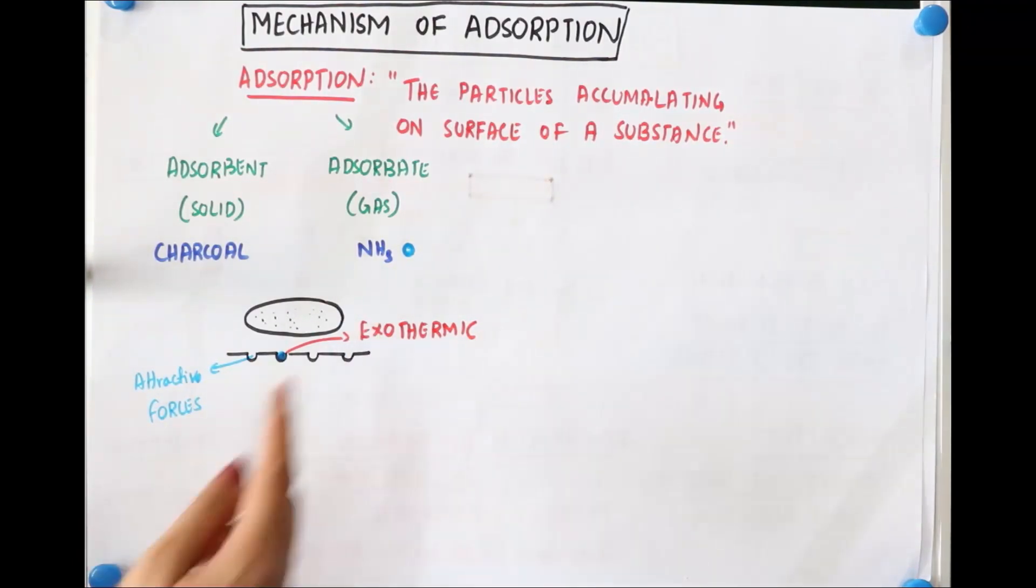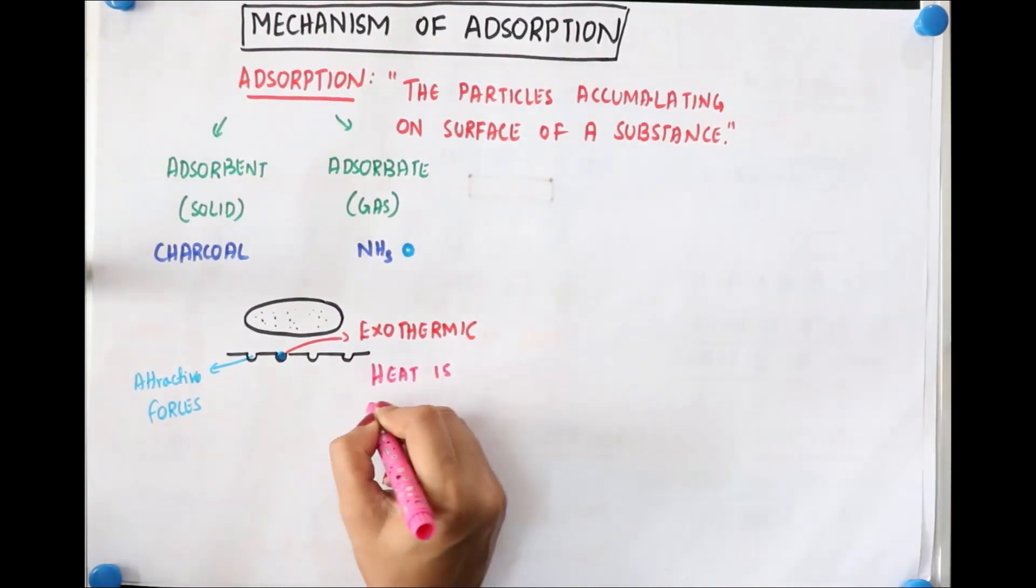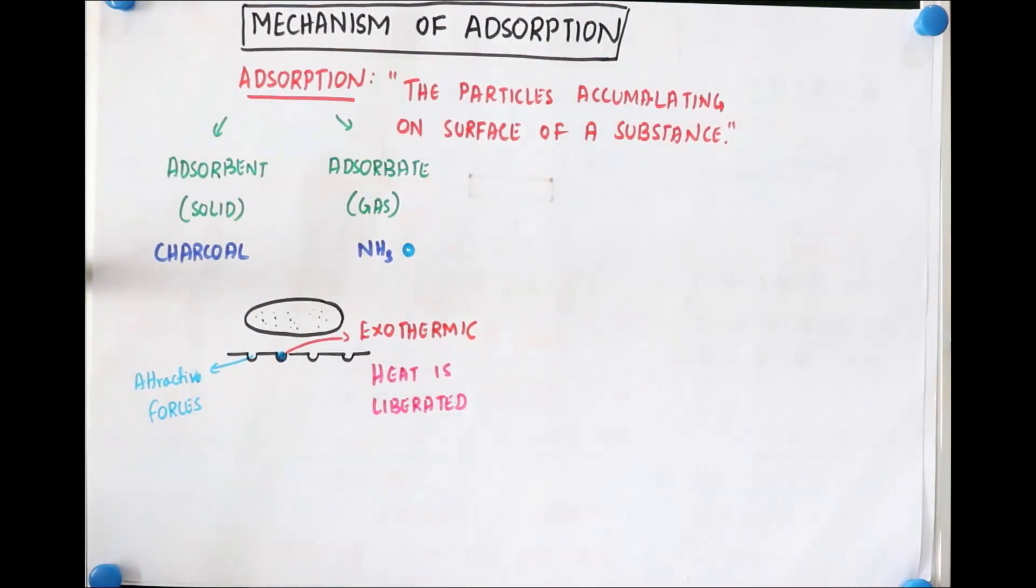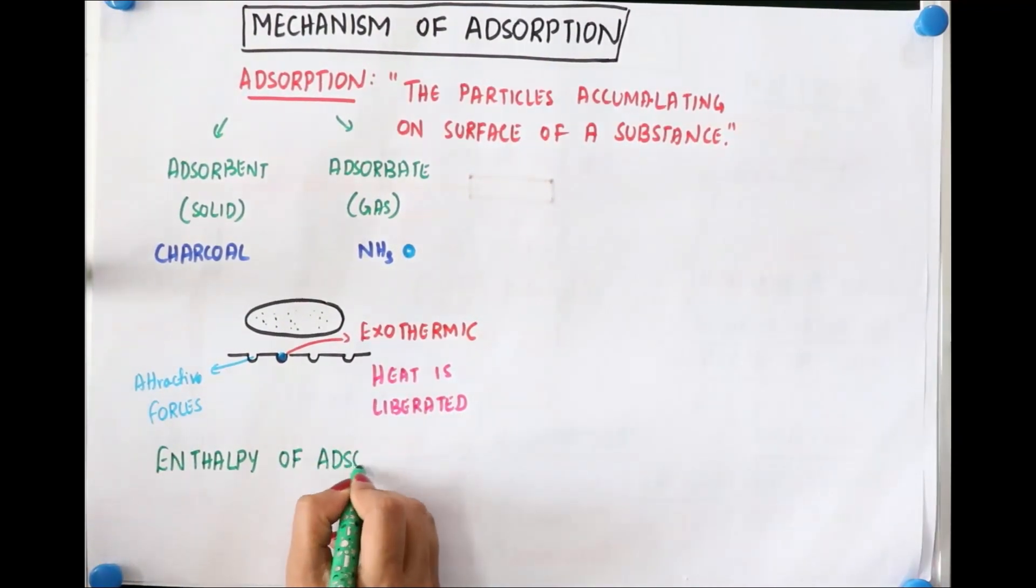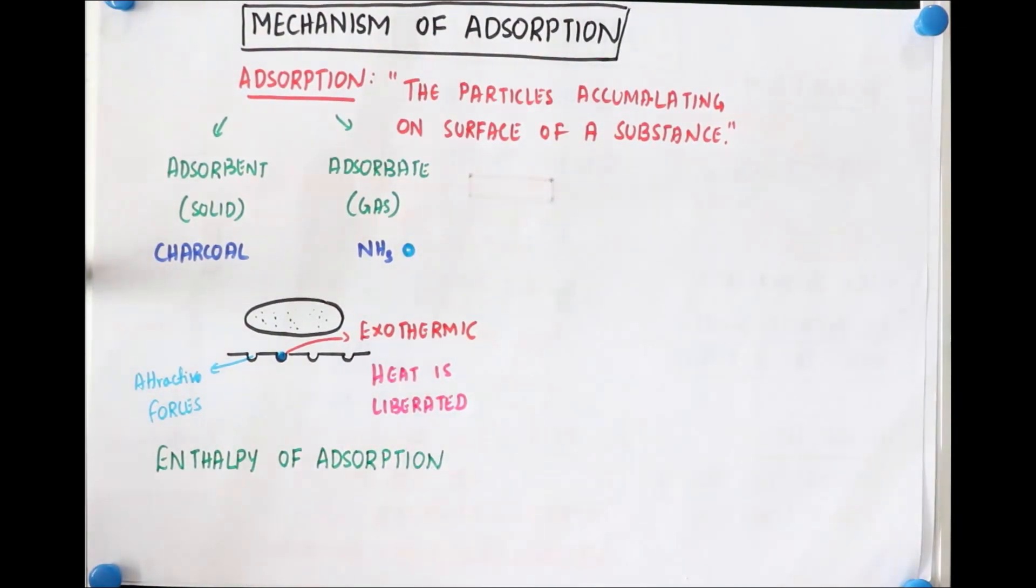When the particle of ammonia sits on the surface of this charcoal, large amount of heat is liberated, so the reaction is called exothermic reaction. We can say heat is liberated, so the change in enthalpy is negative. So there is something called enthalpy change. This process where the heat is evolved, this is called enthalpy. Enthalpy is energy. Enthalpy of adsorption. So basically for this adsorption, however much heat is liberated, that enthalpy is called enthalpy of adsorption.